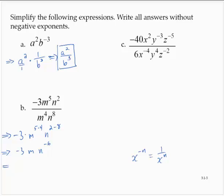Using the same ideas in exercise a, I could rewrite this negative 3 times m times 1 over n to the sixth. And thinking of that negative 3 m as being over 1, I can rewrite this whole thing as the fraction negative 3 m over n to the sixth.